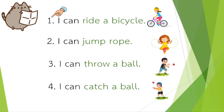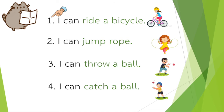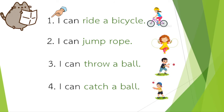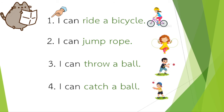I can ride a bicycle. In making a sentence, we will only add the ability. So: I can plus ride a bicycle, or I can plus the ability. I can plus the ability in the picture. Let's read again number 1: I can ride a bicycle. I can ride a bicycle.